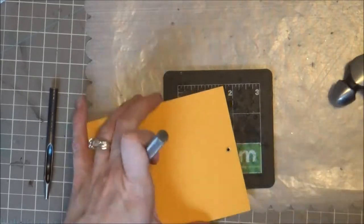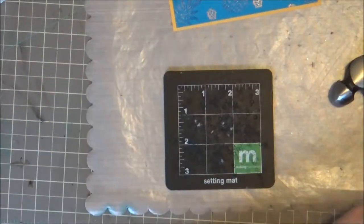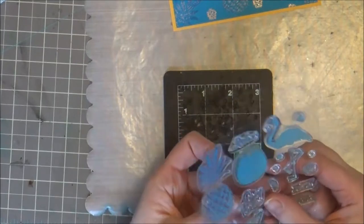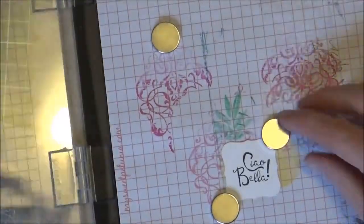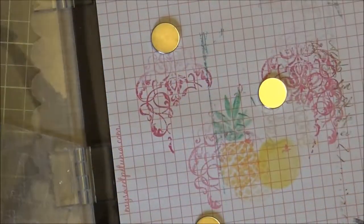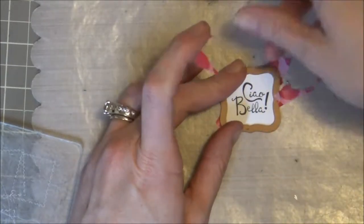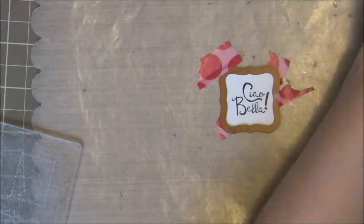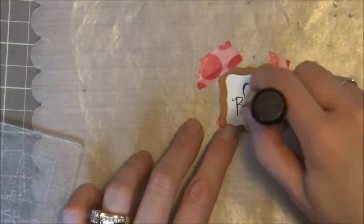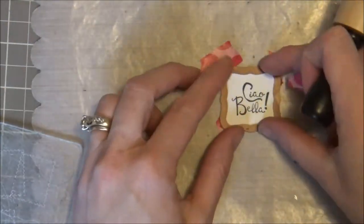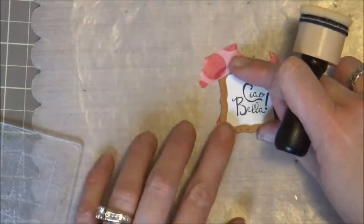Now we're moving on to the sentiment. I used my Spellbinders Nestabilities Label One, the smallest shape there, and stamped the sentiment in Tuxedo Black from Memento. Then I'm using the actual die as a mask. I have not used this small of a die for this mask and had a little trouble—it kept popping off—but I just kept working with it till I got the look I was going for. I'm using that round ink blending tool.